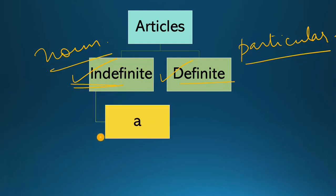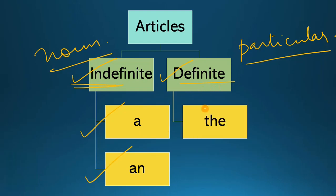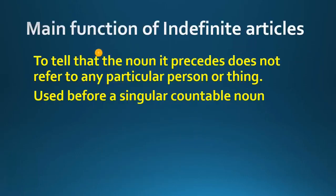Indefinite article में एक article है 'a' और second article है 'an'. दोनों के use में एक minor सा difference है, we will cover that later. And definite article एक ही है, that is 'the'. अब इन articles को कब-कब, कहाँ-कहाँ use करना है, we will discuss in detail. First of all, let us see indefinite articles.